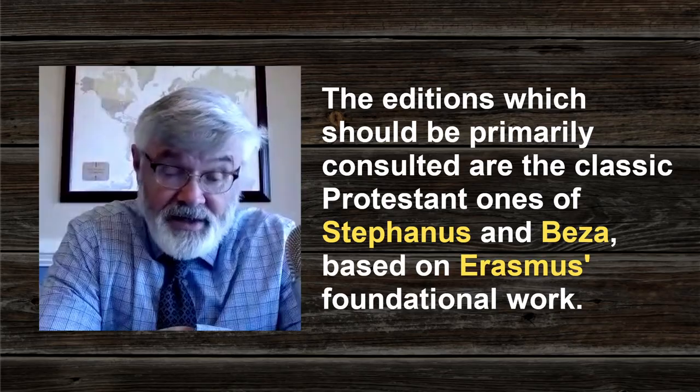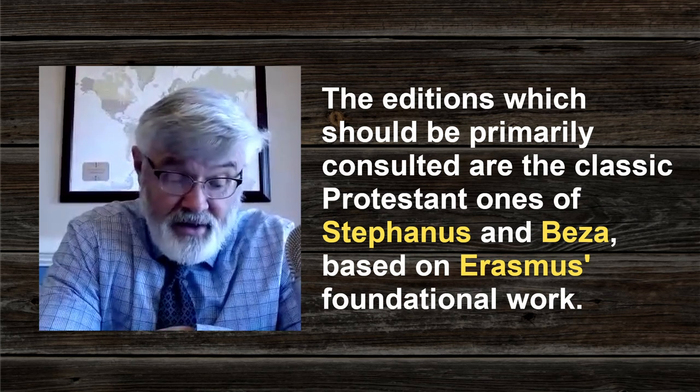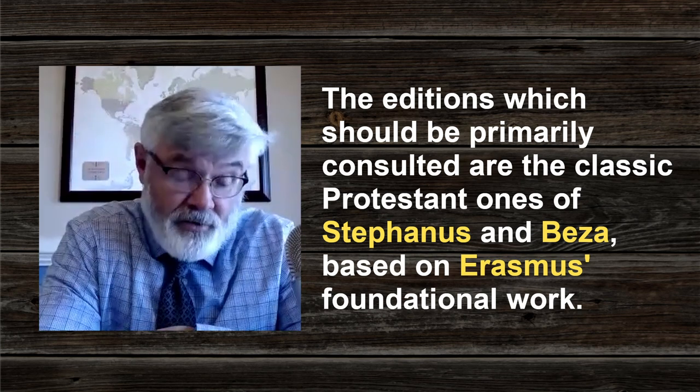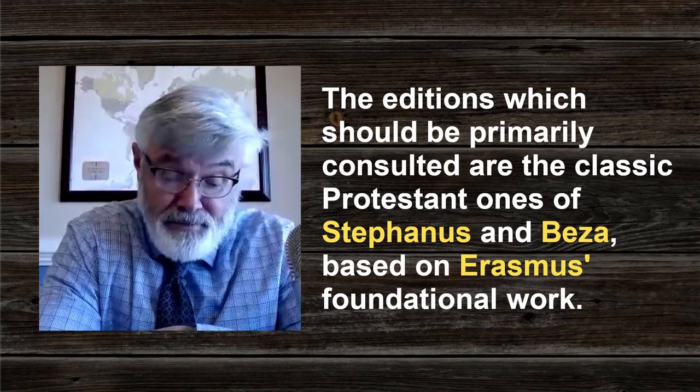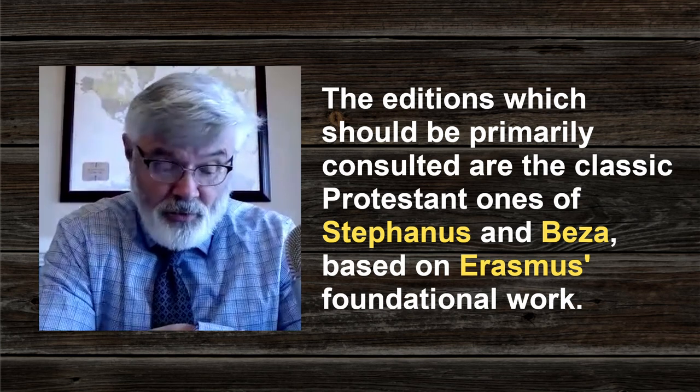In that article, I applied those principles to the passages Yonkin suggested: Revelation 7:7, Revelation 8:11, and 2 Peter 1:1. You were asking me what I mean by 'printed editions of the TR.' In that article I wrote: quote, 'the editions which should be primarily consulted are the classic Protestant ones of Stephanus and Beza, based on Erasmus's foundational work.'